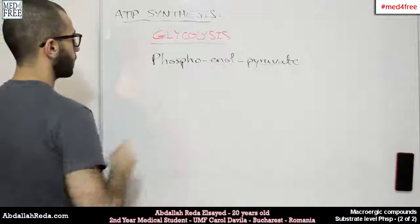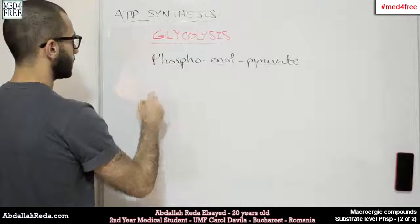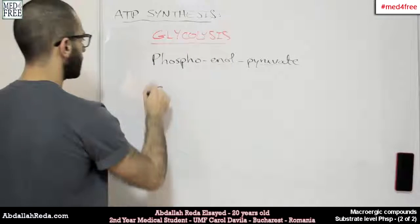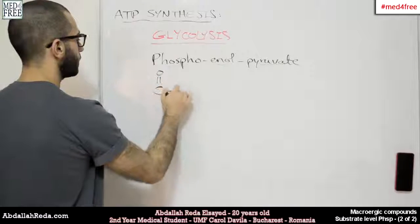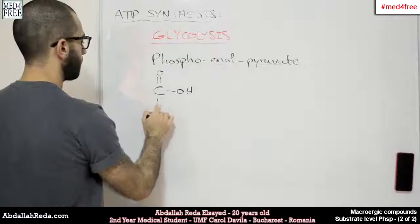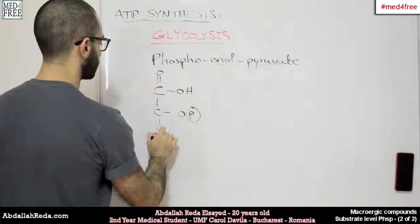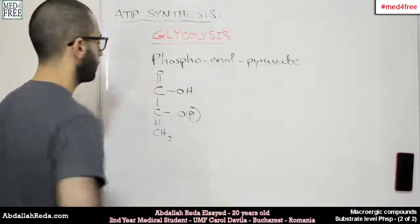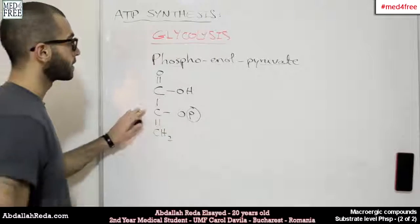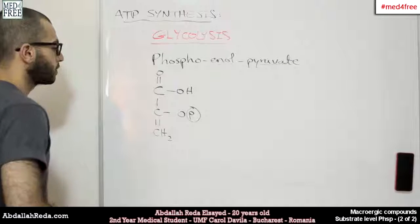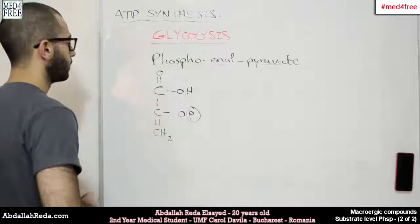Our compound looks like that. We have a compound that looks like that. This is phosphoenolpyruvate. So what happens to phosphoenolpyruvate?